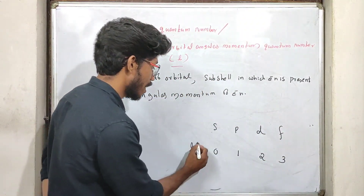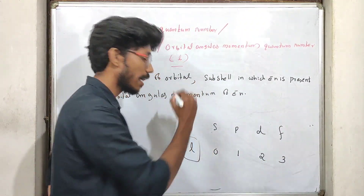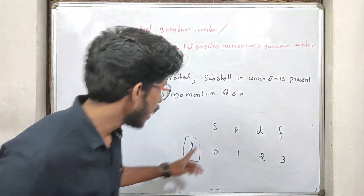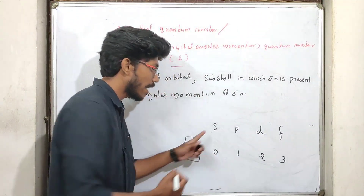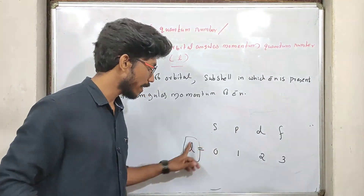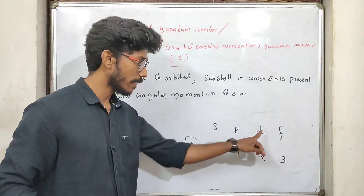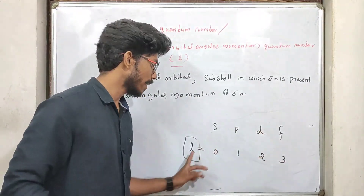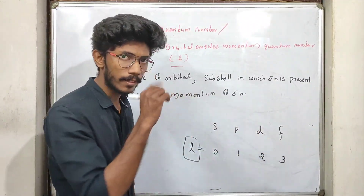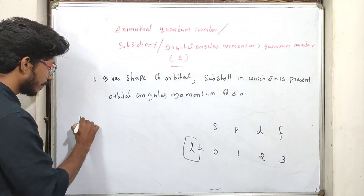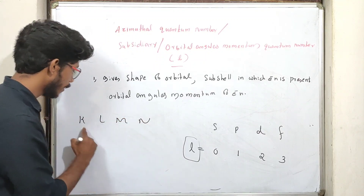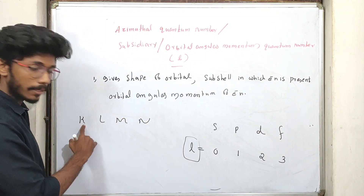This is the azimuthal quantum number. For S sub-shell, L is zero; for P, L value is one; for D, L value is two; for F, L value is three. We can use the concept of S, P, D, F. For K, L, M, N shells — what are the sub-shells?